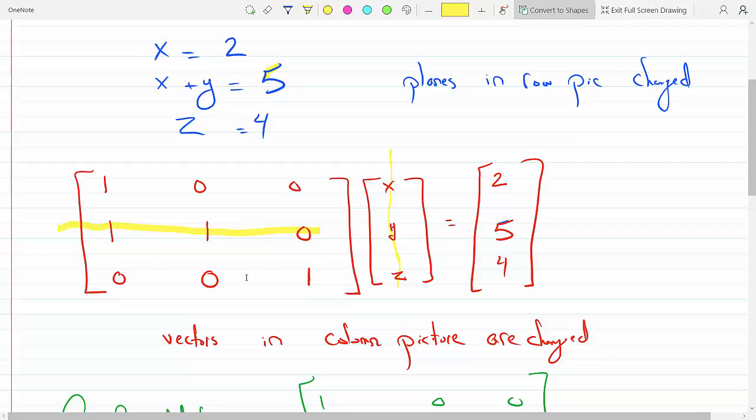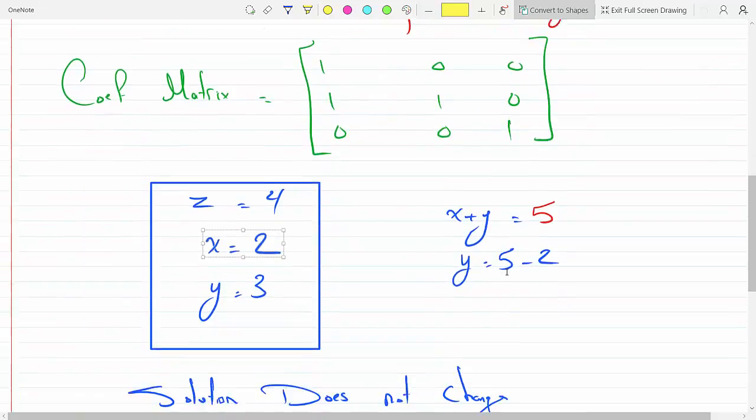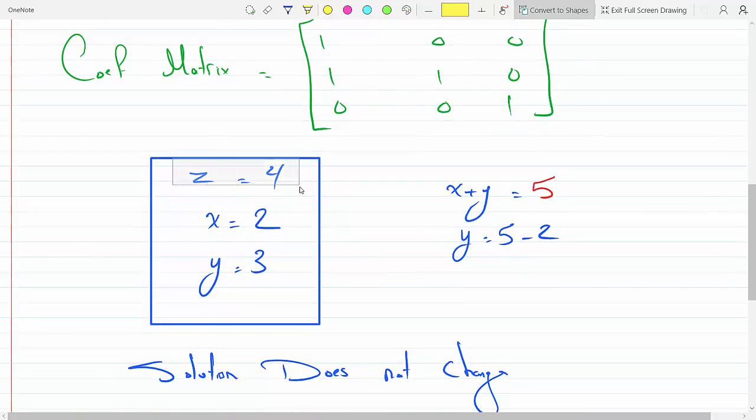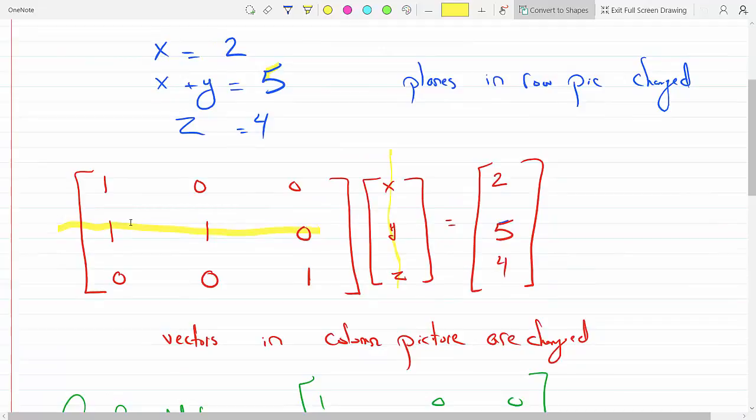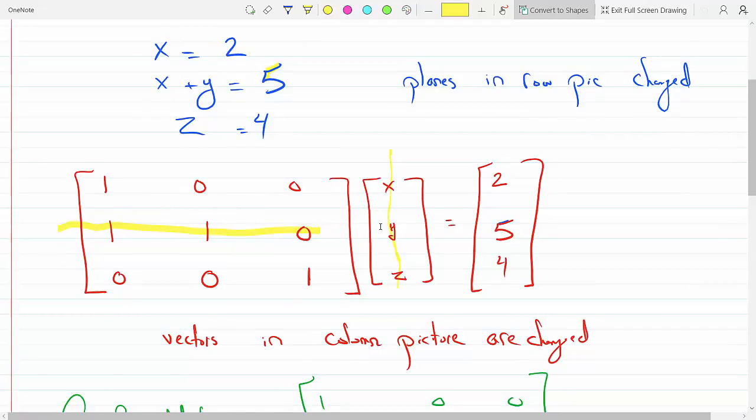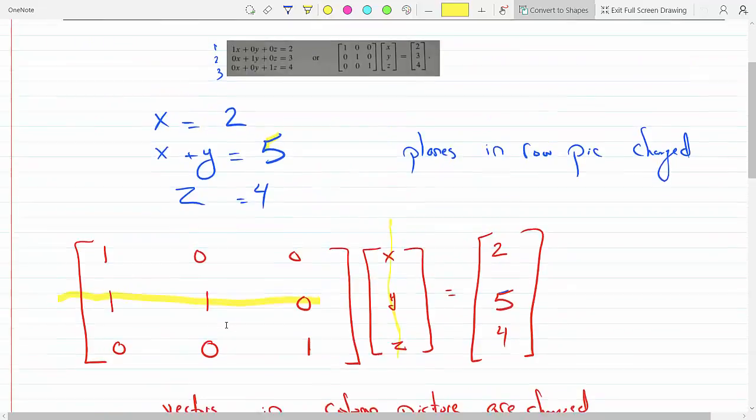Which is z equals 4. And then the second row would give me x plus y plus 0z, so x plus y equal 5. But I've already determined that x is 2, so if I plug it in, I get y equal 3.